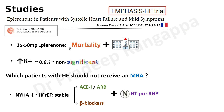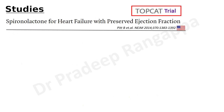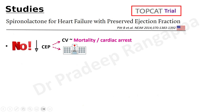Regarding heart failure with preserved ejection fraction seen in the ICU, the answer came from the TOPCAT trial, published in 2014 by Pitt B et al., examining spironolactone for heart failure with preserved ejection fraction. They found no reduction in the composite endpoint of cardiovascular mortality, aborted cardiac arrest, and hospitalization. The evidence supports eplerenone for heart failure with reduced ejection fraction; there is no demonstrated benefit in heart failure with preserved ejection fraction.